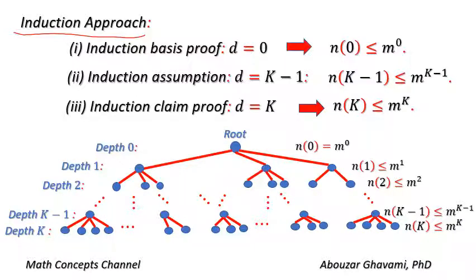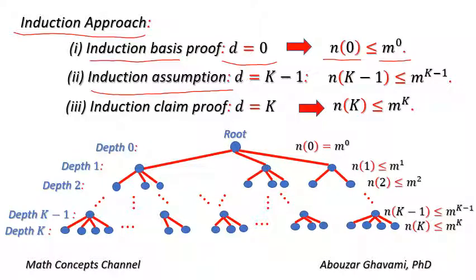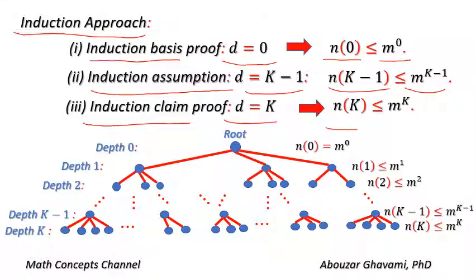In the first step, we prove the induction basis. We show that for D equal to 0, N(0) is less than or equal to M to the power of 0, which equals 1. In the second step, we assume the induction assumption: for depth K-1, N(K-1) is less than or equal to M to the power of K-1. In the third step, we prove the induction claim: using the induction assumption and hierarchical structure of the M-ary tree, we prove that for depth K, N(K) is less than or equal to M to the power of K.